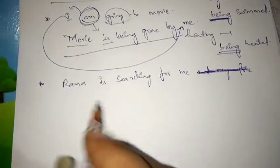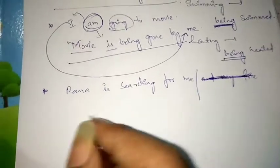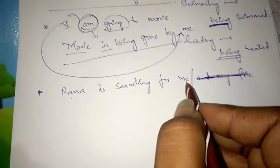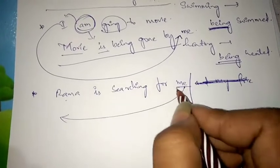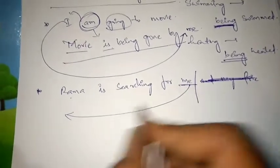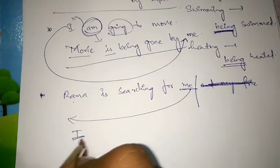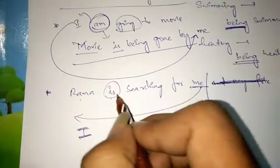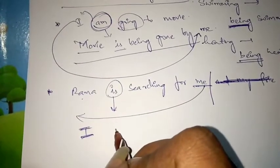Now let us see another type of question in present continuous: 'Rama is searching for me.' The subject becomes the object and the object 'me' becomes the subject 'I'. This is the rule — when the object is 'me', the new subject becomes 'I'.